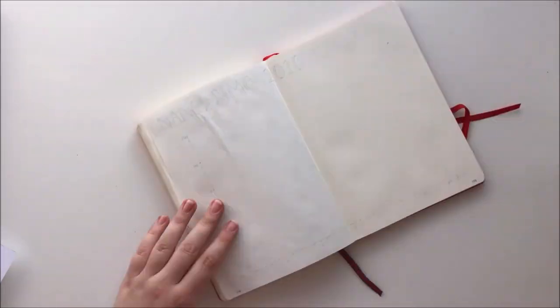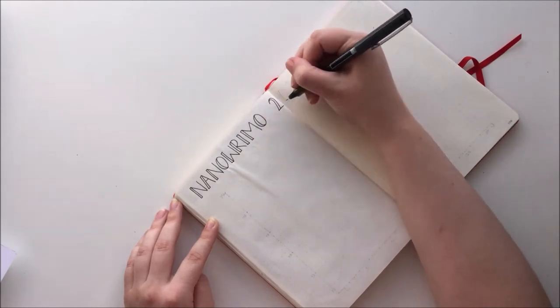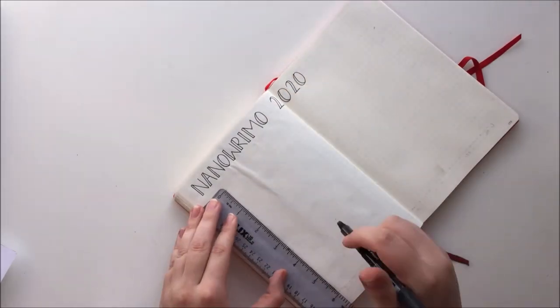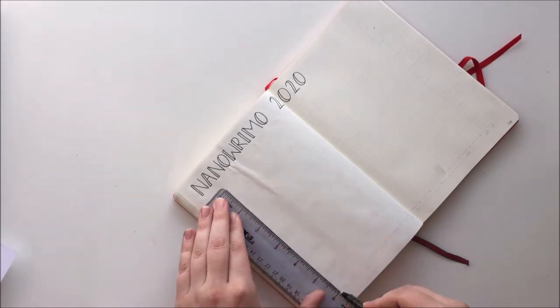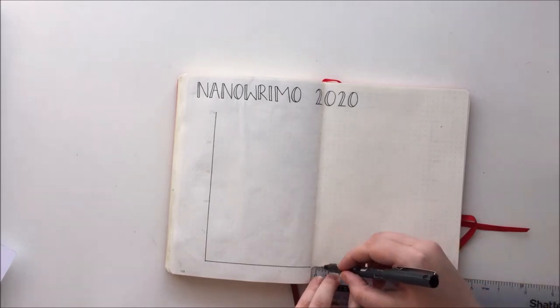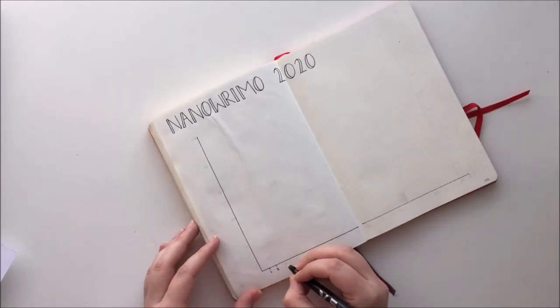So the previous two spreads are the same every month, but now I'm going to be doing my specific NaNoWriMo spreads. This first one is my overall tracker, which is going to be a line graph showing my progress throughout the month. I'm doing the lines and the x-axis in pen, but leaving the y-axis labels in pencil, as I'm not actually going to fill this all in until the end of the month.